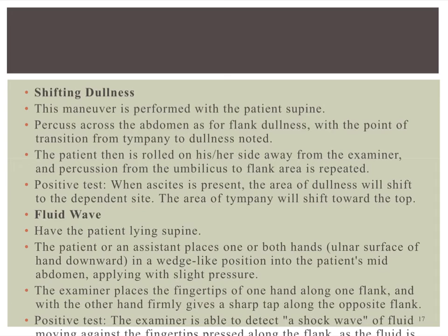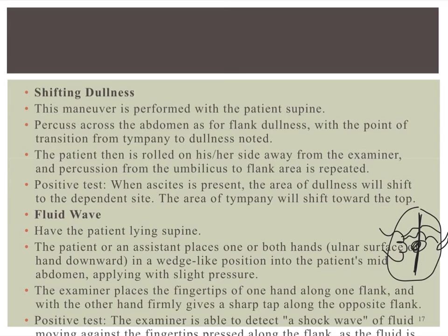For the fluid wave test, the patient lays supine and actually helps you — the patient puts their hand straight down along their belly button to block transmission through fat. You place one hand on one side of the abdomen and push down, then with your other hand you come in and tap. You're looking to see if you can produce a wave that your other hand feels — like throwing a rock into a pond and feeling that ripple effect. If the patient has fluid in their abdomen, it will transmit that fluid wave from one side to the other.